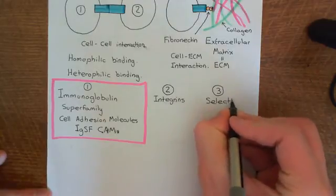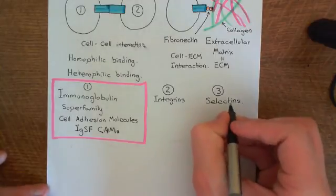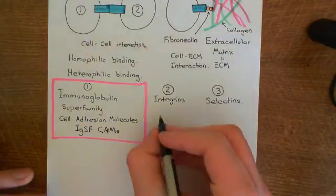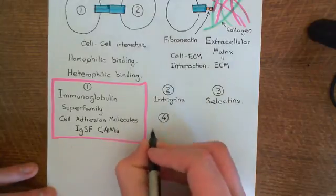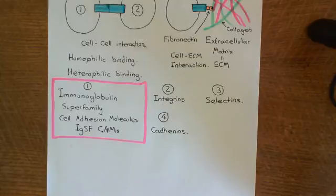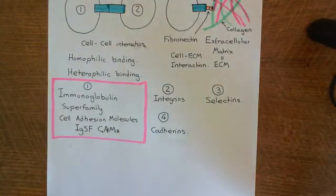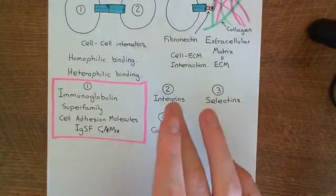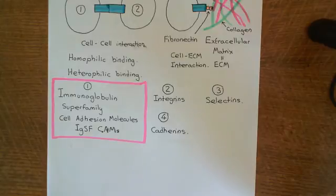The selectin family actually only has three members, which we'll look at in the next video. The fourth family is the cadherins — we're not going to look at those in this playlist because they're not considered important for immunology. All three of the other families have examples very important in immunology: selectins (P-selectin, E-selectin, and L-selectin), integrins (LFA-1, VLA-4), and IgSF CAMs (ICAM-1, VCAM-1). In the next video, we'll look at the three different examples of selectins and what they do.